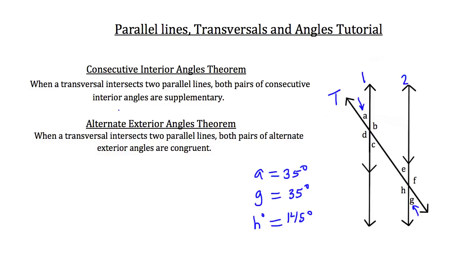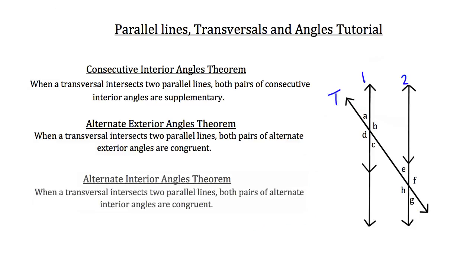You can see how knowing these theorems can really help you fill in the missing angles on diagrams like this. The last theorem is the alternate interior angles theorem: when a transversal intersects two parallel lines, both pairs of alternate interior angles are congruent. That means B and H are congruent to each other, so if angle B had a measurement of 135 degrees, then angle H must also be 135 degrees. Angles C and E are also congruent to each other because of the alternate interior angles theorem.